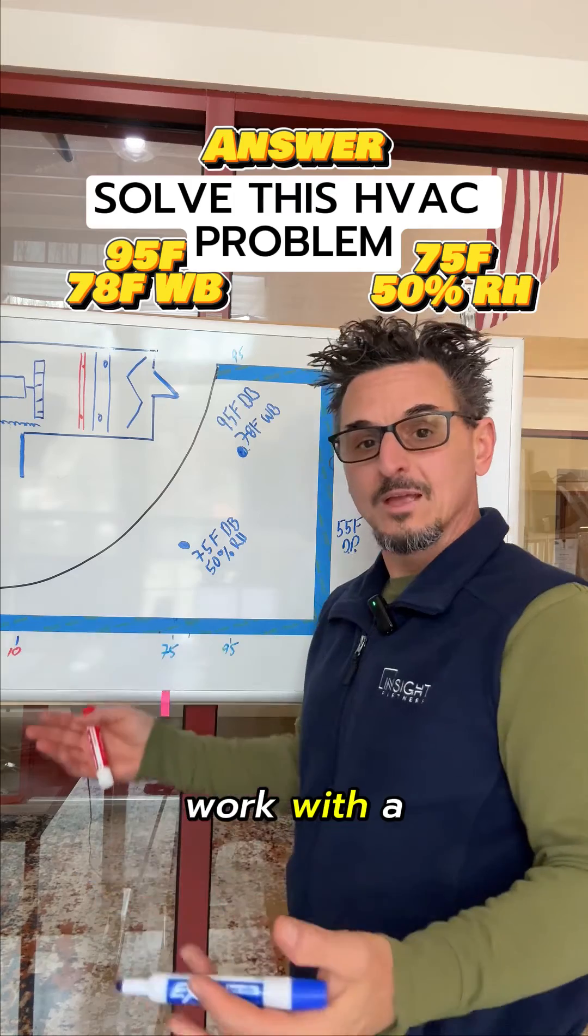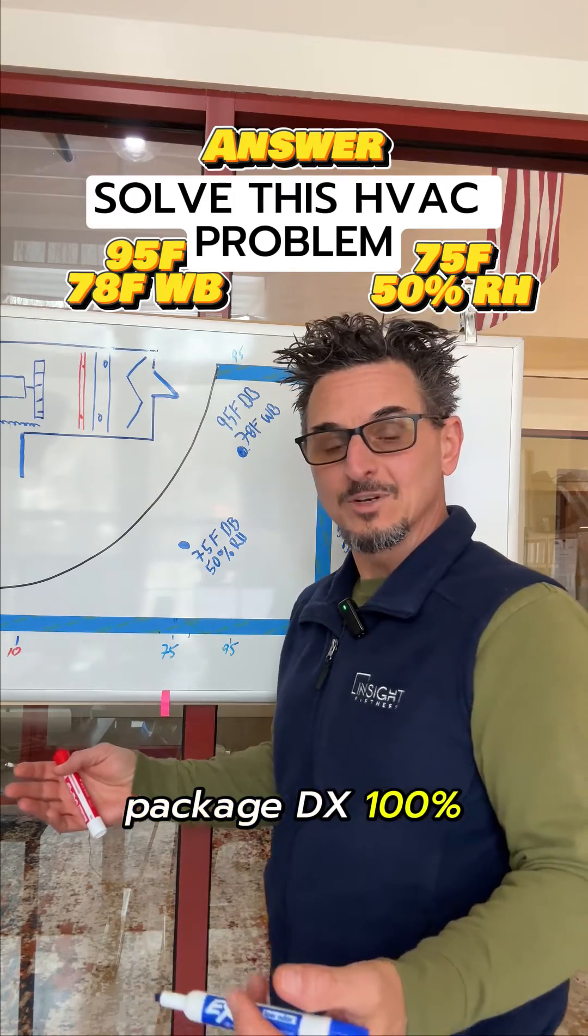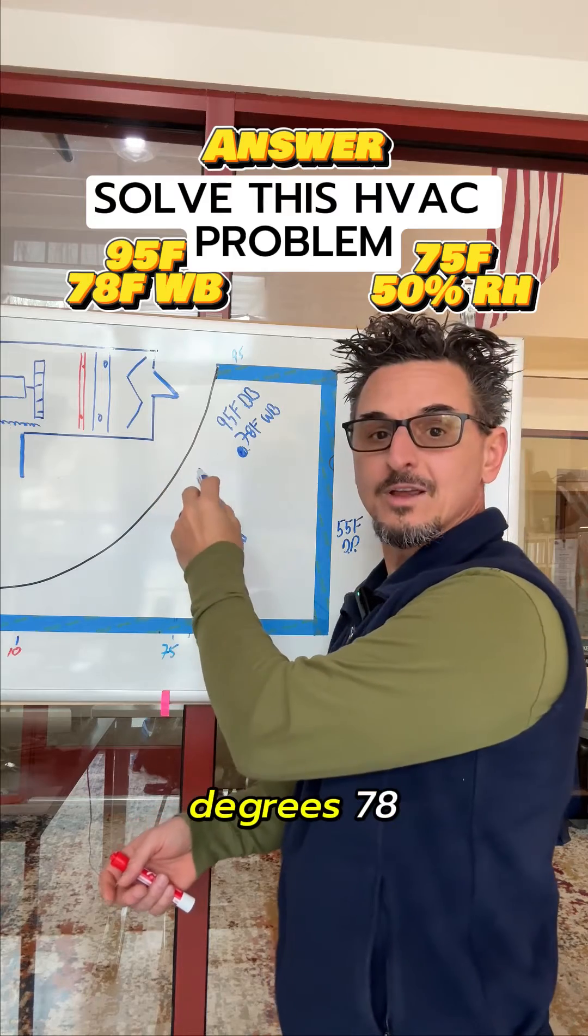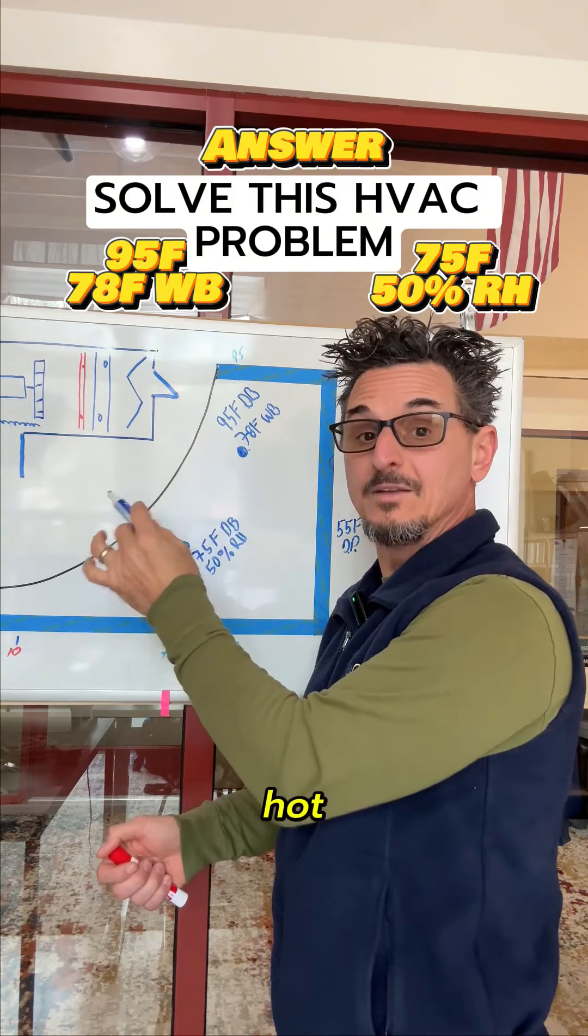So how does it work with a package DX 100% outdoor air unit? Well, I'll show you. So you have this air at 95 degrees, 78, which is very hot, very humid air.